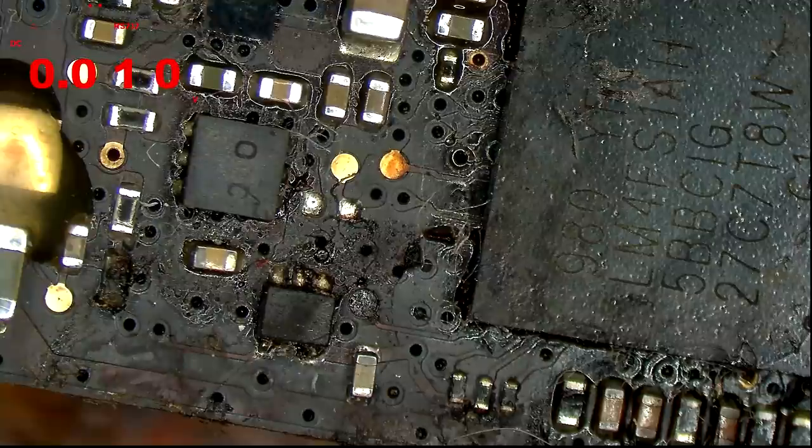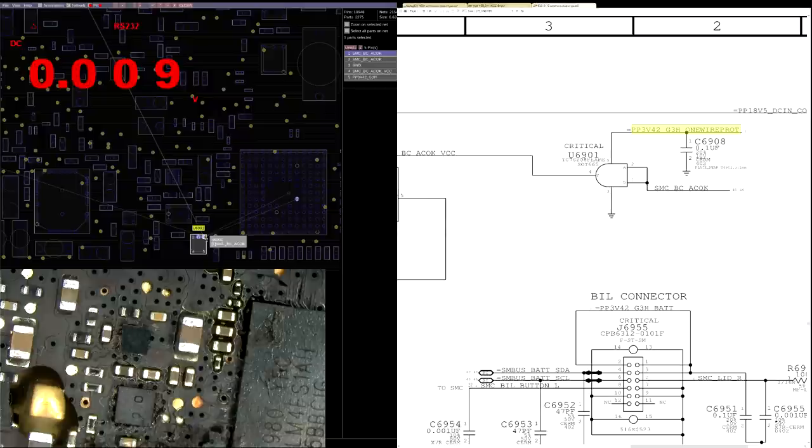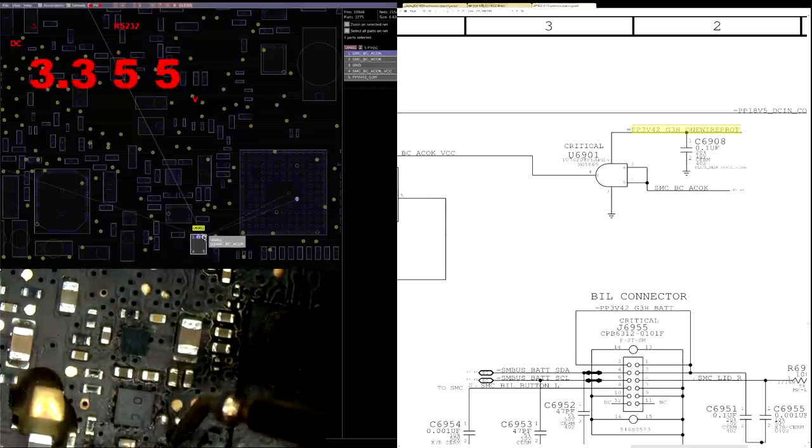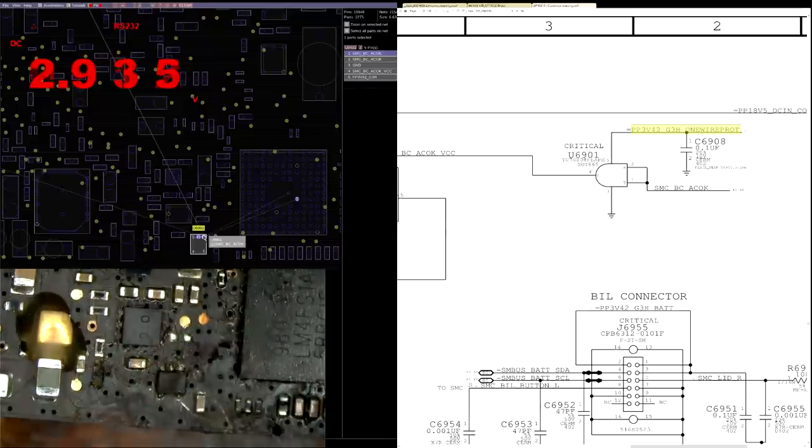We're going to see what we get on pin 5. So is PP3V42 making it to the chip? Pin 1. SMCBCACOK is present on pin 1 of my chip.